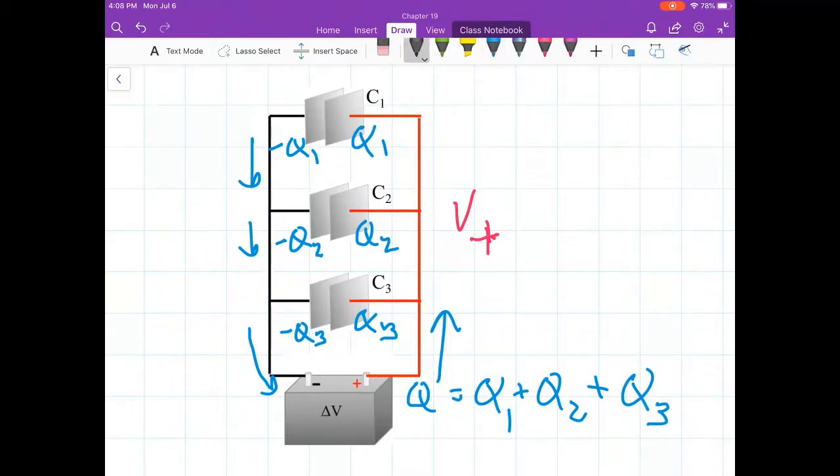The left side, if we call that potential V minus, then the left plate of C1, C2, C3, and the terminal battery are all at V minus. Therefore, if we say, what is the difference in voltage of C1? It's going to be delta V, the same as the battery. What about C2? Delta V. C3, delta V. Because the difference from one side of the capacitor to the other, for each one, it's V plus to V minus, the same delta V.